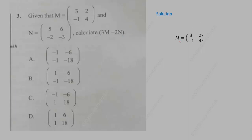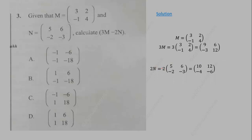Matrix M has entries 3, 2, −1, 4. Multiplying by 3 gives entries 9, 6, −3, 12. We similarly multiply N by 2. Subtracting corresponding entries: 9 − 10 = −1, 6 − 12 = −6, −3 − (−4) = 1, and 12 − (−6) = 18.